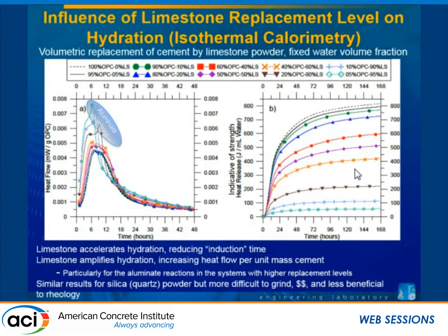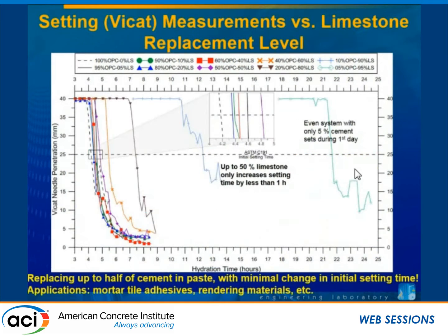We can begin to tackle that question by looking at calorimetry. These are isothermal calorimetry results for a study where we did a volume replacement of cement with limestone at several different levels. As we increase the limestone additions, the silicate and aluminate reactions become amplified. We also notice that the limestone reduces the induction period to very small timeframes, and that about the same amount of hydration has occurred at setting time for each mixture.